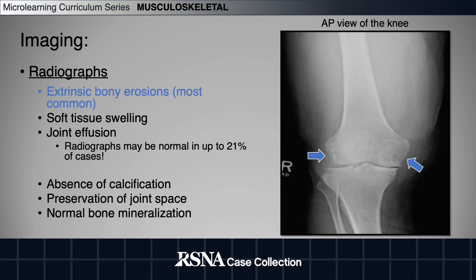Characteristic findings on radiographs most commonly include bony erosions, often with well-defined sclerotic margins. Associated soft tissue swelling and joint effusions may also be seen. It is, however, important to note that radiographs may be normal in up to 21% of cases.